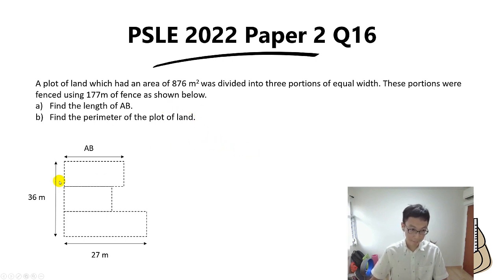First of all, first step we take 36 divided by 3 to find each of the widths. We get 12 meters, so each width is 12 meters.